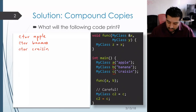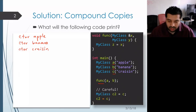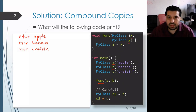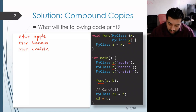Now we have a call to func, and the first thing we should look at is the parameters for func — are they passed by reference or passed by value? The first one is passed by reference, which means we're not going to make a copy; rather, x will become an alias for the object a inside of main.